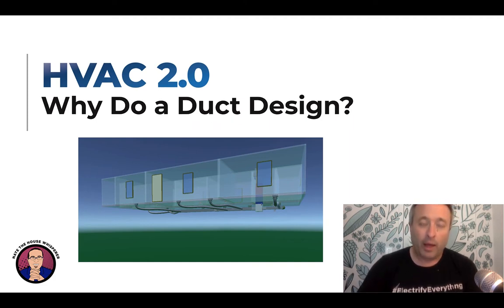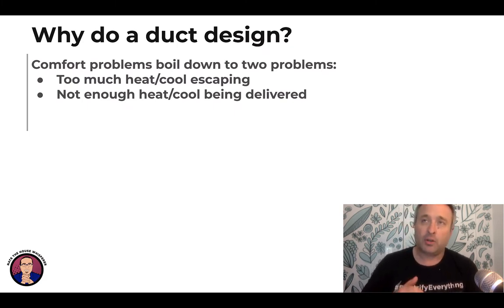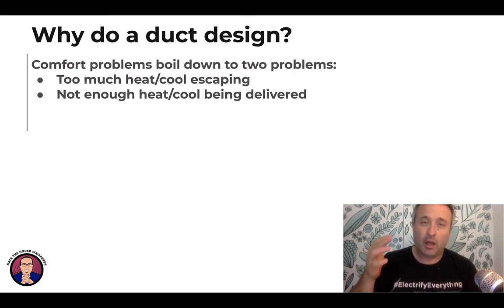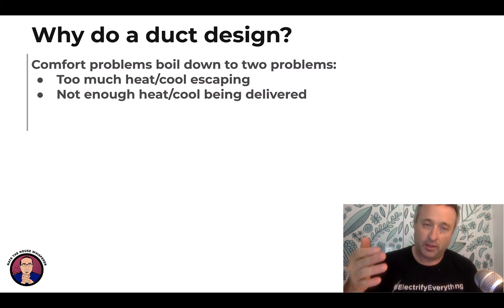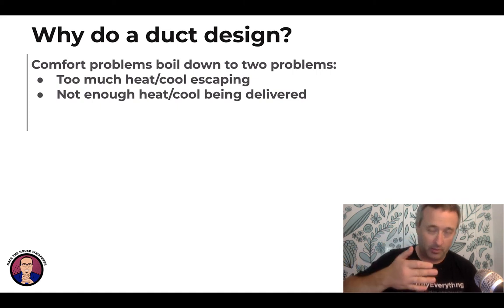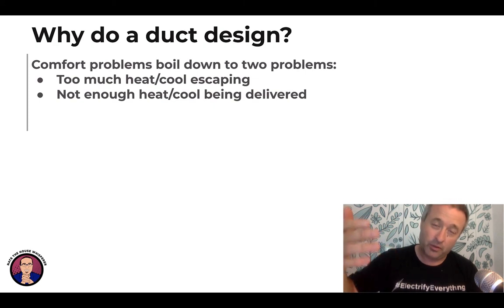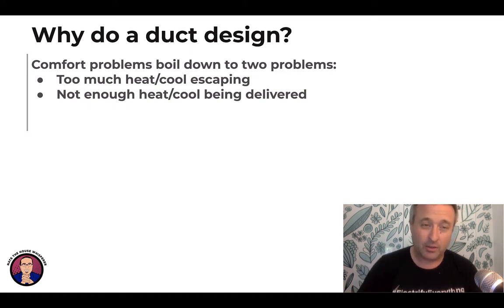Let's start with why. Here's the key piece — it's a technical thing. If you have an uncomfortable room, or you have moisture problems, or there's dust, that is fundamentally caused by one of two things. The first one is there's too much heating or cooling escaping the house — going from inside to out and vice versa. The second one is there's not enough heating or cooling being delivered to the room that is uncomfortable. And it can be either or, or it can be both.